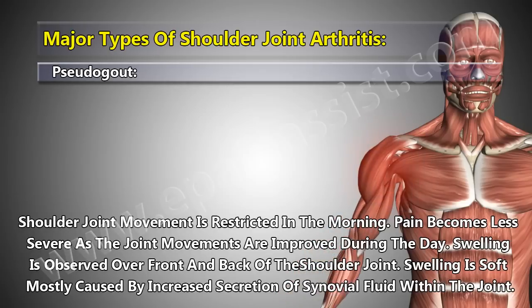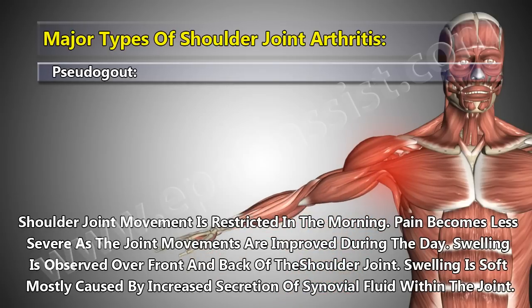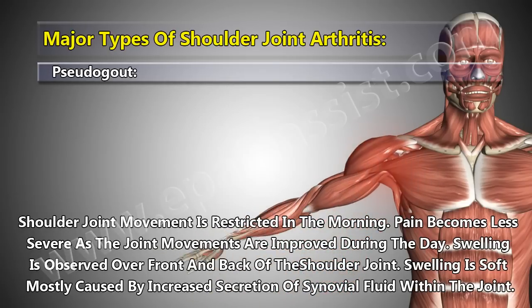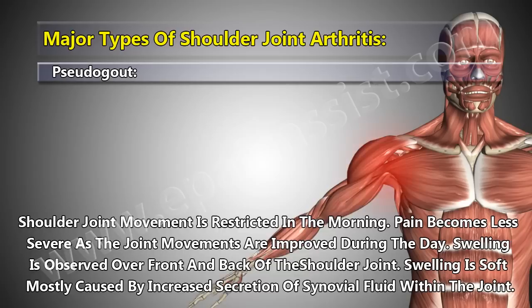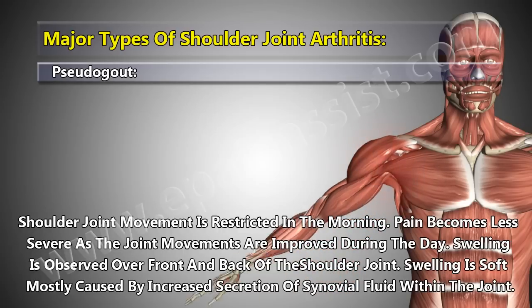Swelling is observed over the front and back of the shoulder joint, mostly caused by increased secretion of synovial fluid within the joint.